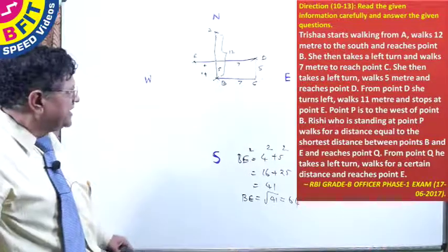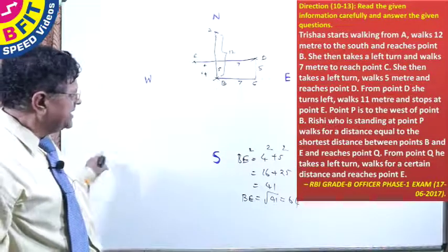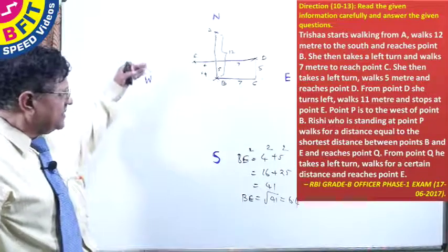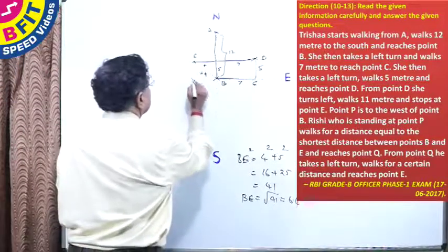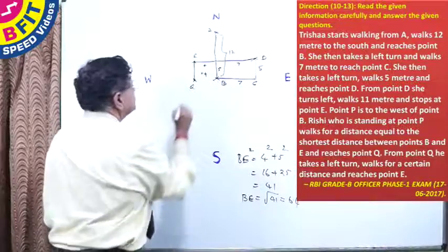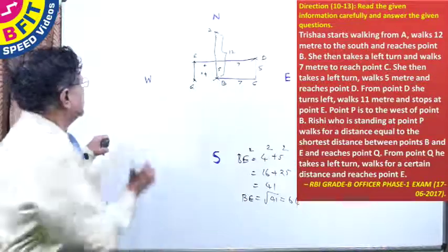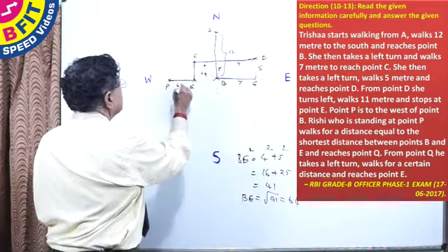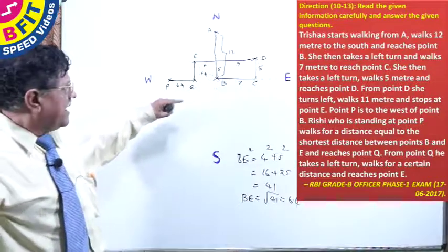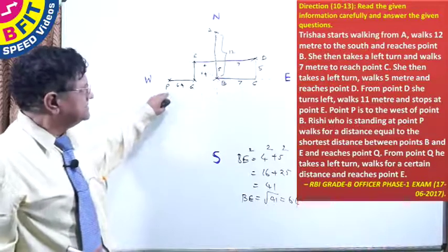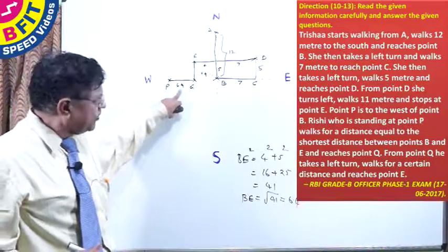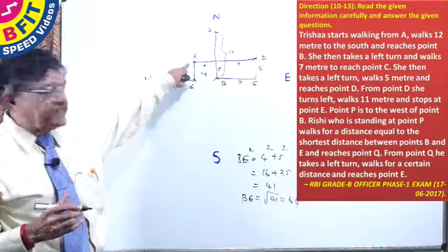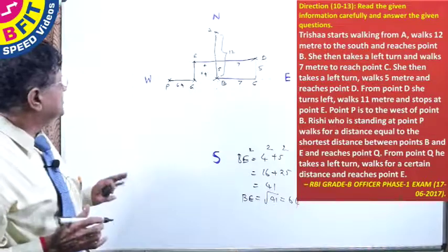Rishi walks 6.4 meters from point P and reaches point Q. From Q, he takes a left turn and walks for a certain distance to reach point E. That is the basic data given.